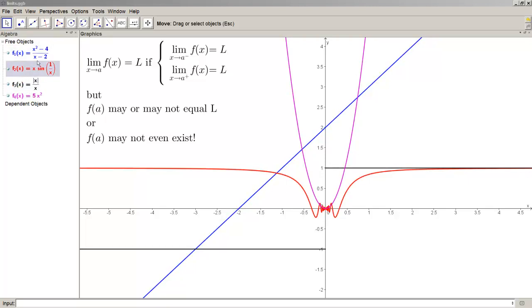So let's just evaluate the limits for x times sine 1 over x, absolute value of x over x, and 5x squared as x goes to 0, and we'll do this one as x goes to 2.